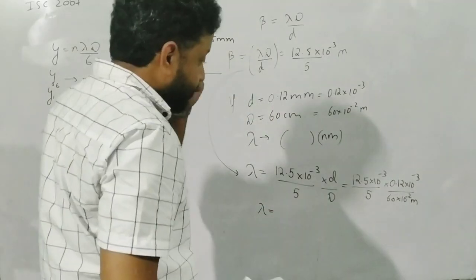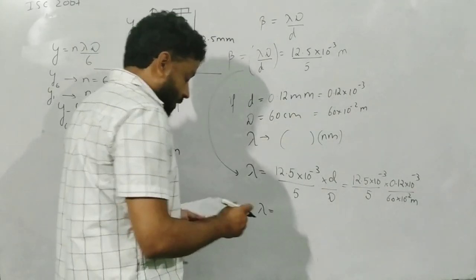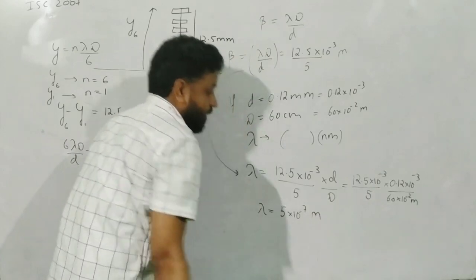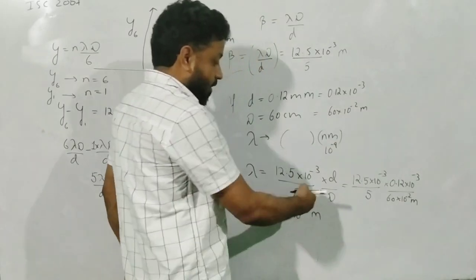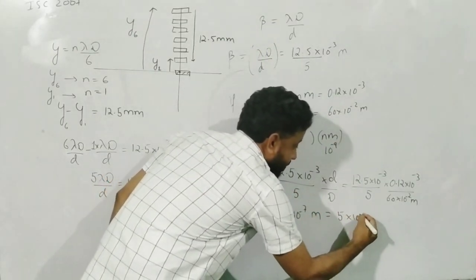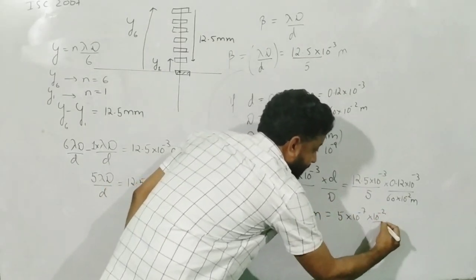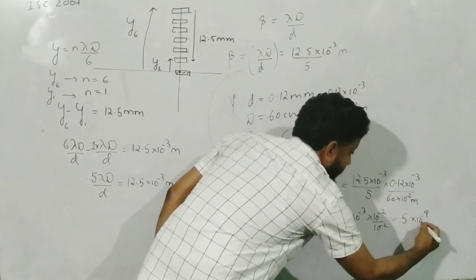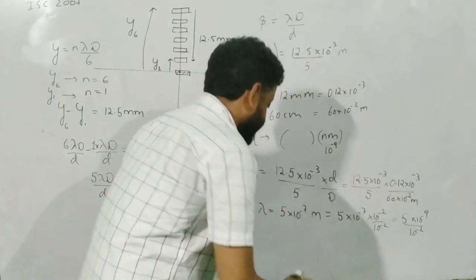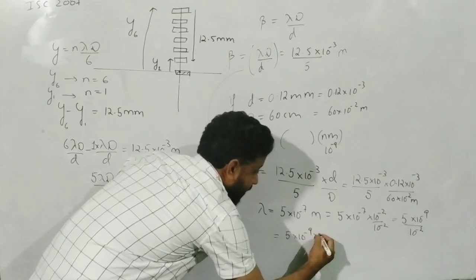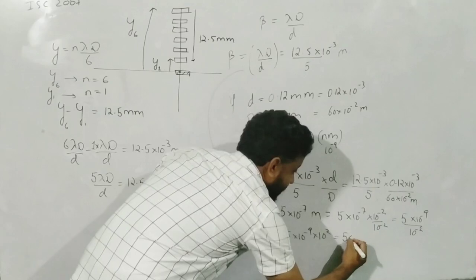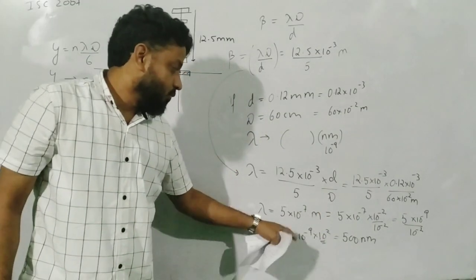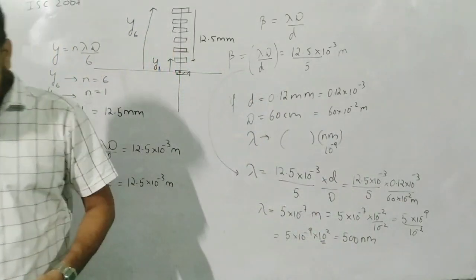The answer you will get is 5 × 10⁻⁷ meter. To convert to nanometers: nano means 10⁻⁹, so multiply and divide by 10⁻²: 5 × 10⁻⁷ = 5 × 10⁻⁹ × 10² = 500 nanometer. You could also shift the decimals directly — 5 × 10⁻⁷ m equals 500 nm.